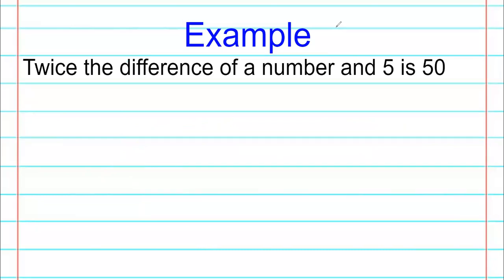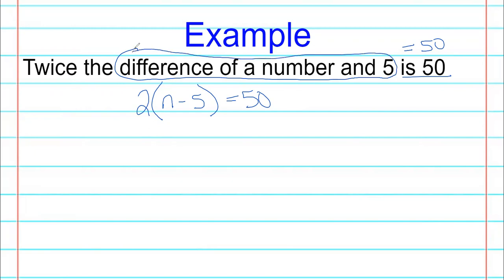Twice the difference of a number and five is 50. So again is 50, so easy, equals 50. Twice the difference of a number and five. So the difference between a number and five needs to go inside a parentheses because we're doing two times whatever that difference is. So two times n minus five in parentheses equals 50. So it's almost like we need to figure out this difference first, and that's why we put it in parentheses because we know order of operations, parentheses will make it happen first and then we can do two times that.